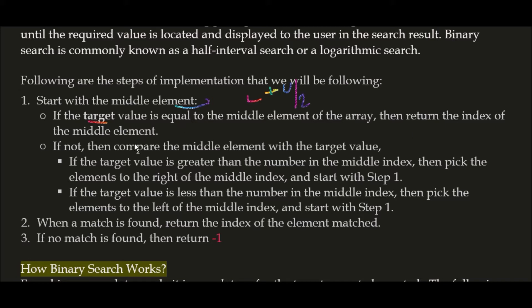Next step: if middle element is not equal to target value, and if the target value is greater than the number in the middle index, then pick the elements to the right of the middle index. Then start with step one and further processing starts again, searching for the middle element but only in the upper index values area.